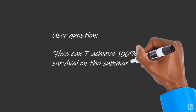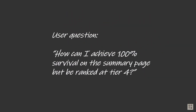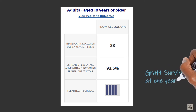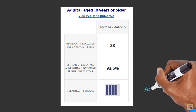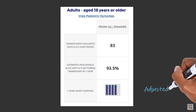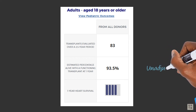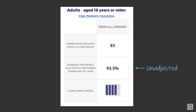How can a program achieve 100% survival on the summary page but be ranked at Tier 4? Both the transplant outcomes on the summary page and the tier assessments are based on one-year graft survival. But the five-tier assessments are based on the expected graft survival — specifically the observed versus expected hazard ratio, which is adjusted — whereas the post-transplant outcomes on the summary page are based on the estimated graft survival, which is unadjusted.